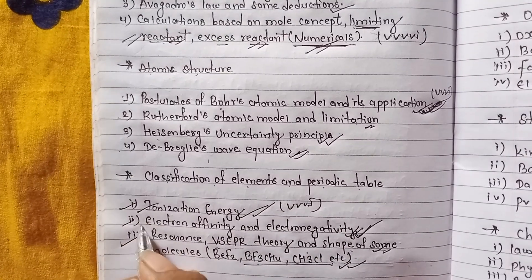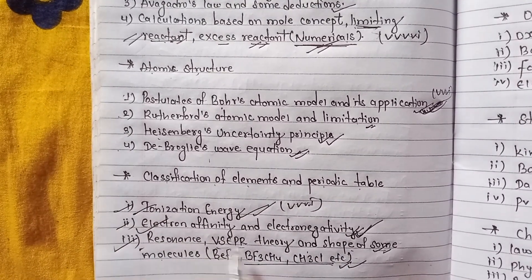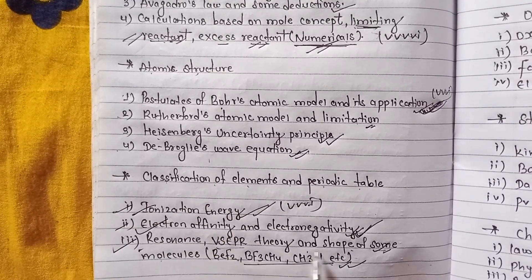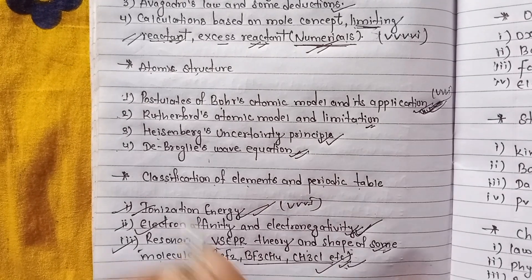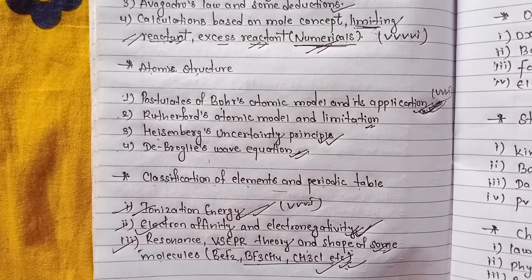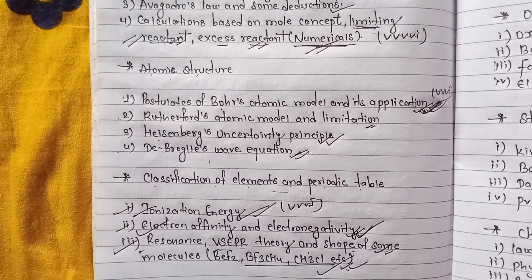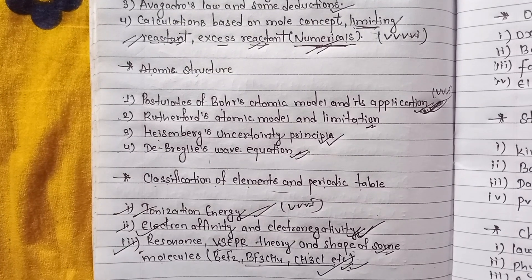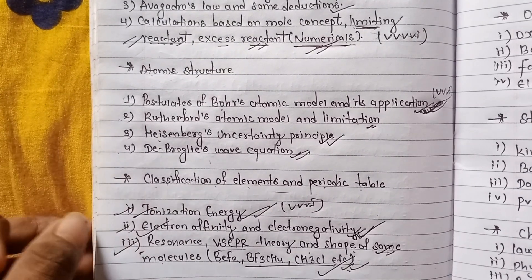Ionization energy, electron affinity and electronegativity, resonance, VSEPR theory and shapes of some molecules — all very important. Classification of elements is also a very important topic. This is chapter 3.